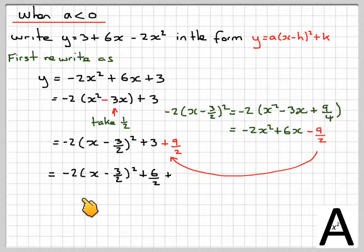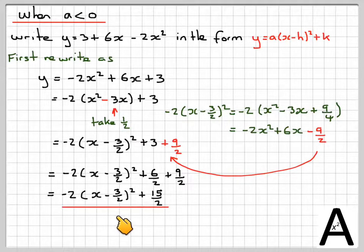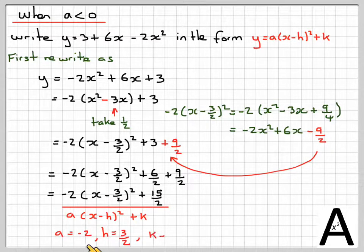So we get minus 2 brackets x minus 3 over 2 plus 6 over 2 plus 9 over 2, which is minus 2 brackets x minus 3 over 2 squared plus 15 over 2. So comparing in this form a brackets x minus h all squared plus k, a is minus 2, h is 3 over 2, and k is 15 over 2.